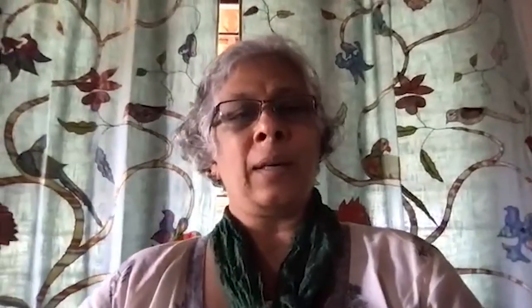Connected intimately to the golden ratio is this sequence of numbers called the Fibonacci series, named after an Italian mathematician, Fibonacci. The first few numbers are 0, 1, 1, and so on. How do you get a number at any given place? You add the two previous numbers. So you have 0, 1, and then you add the first two, you get 1 again, then 1 plus 1 is 2, 2 plus 1 is 3, 2 plus 3 is 5, and so you can keep on generating the numbers in this sequence.